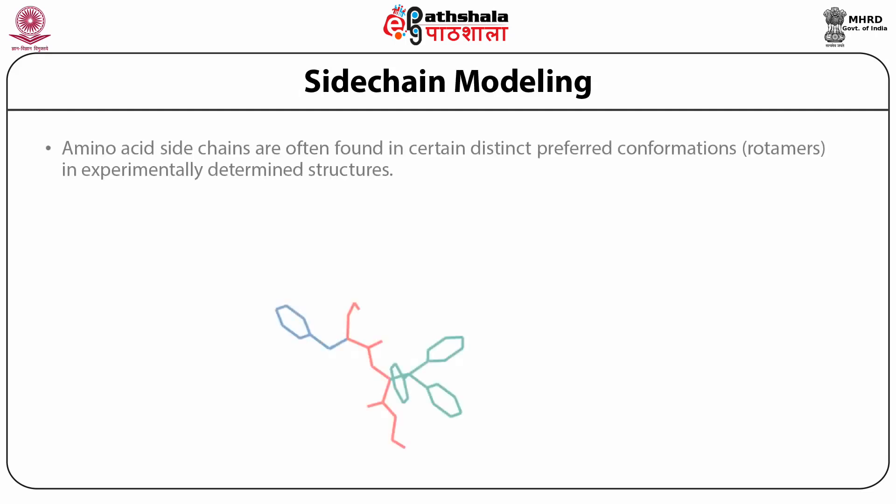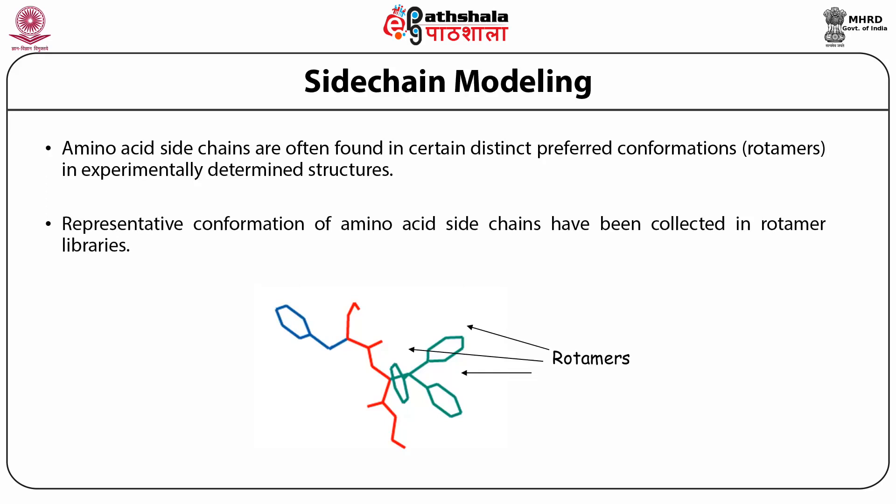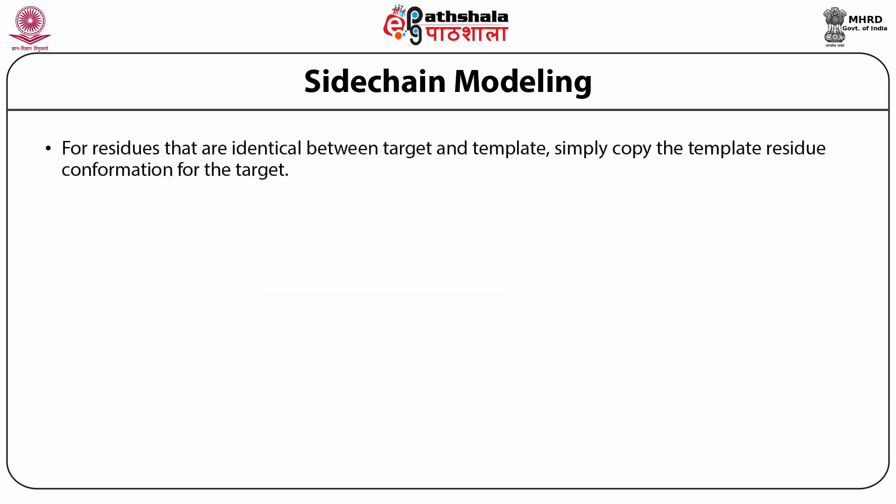The next step is side chain modeling. Amino acid side chains are often found in certain distinct or preferred conformations called rotamers. For each amino acid, you check the possible rotamers and pick the rotamer which is most likely for that amino acid and which packs well with neighboring residues. Do not pick rotamers which bump into each other — pick those which pack well without steric clashes.